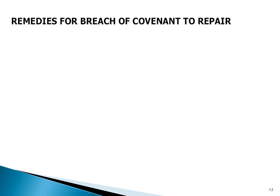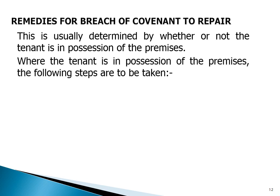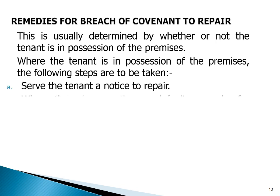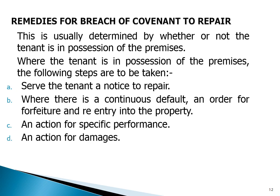Remedies for breach of the covenant to repair are determined by whether or not the tenant is in possession of the premises. Where the tenant is in possession, the following steps are taken: (a) a salvator notice to repair; (b) where there is a continuous default, an order for forfeiture and re-entry into the property; (c) an action for specific performance; (d) an action for damages.